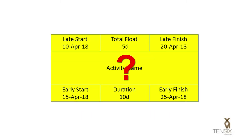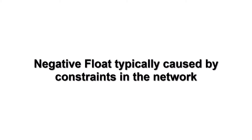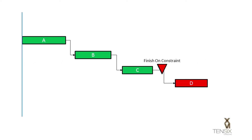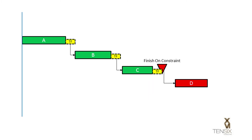How is this possible? How can we calculate an early date that falls after a late date? In every case where you see Negative Float in a schedule, it will be due to a constraint somewhere on the critical path. In this diagram, you can see that there are three activities that currently have some float on them, represented by the yellow box on each activity. They have float because there is a constraint on Activity C. But in this first diagram, the finish-on constraint date is set later than the currently scheduled late finish date of Activity C. Therefore, some float exists for Activity C and its predecessors.